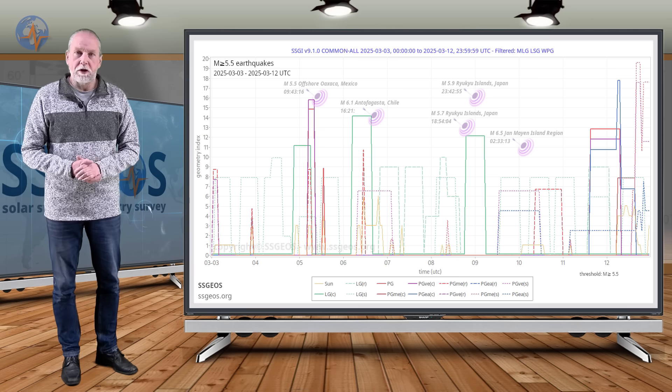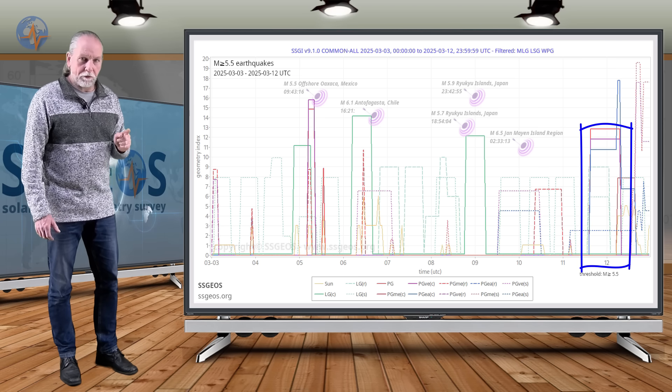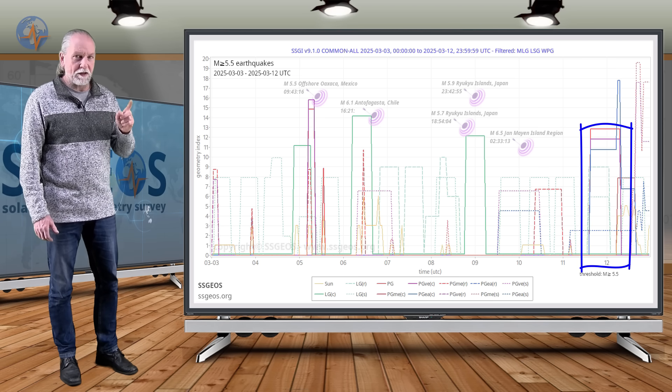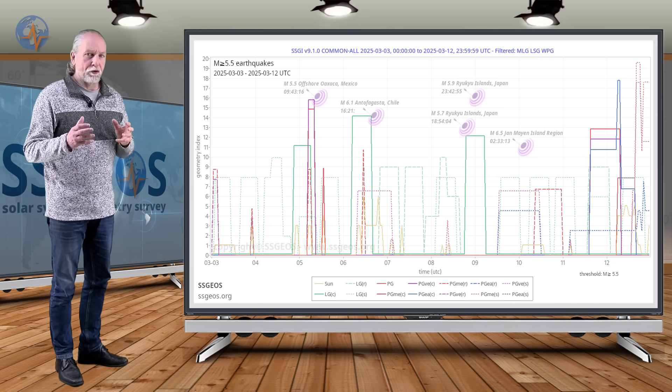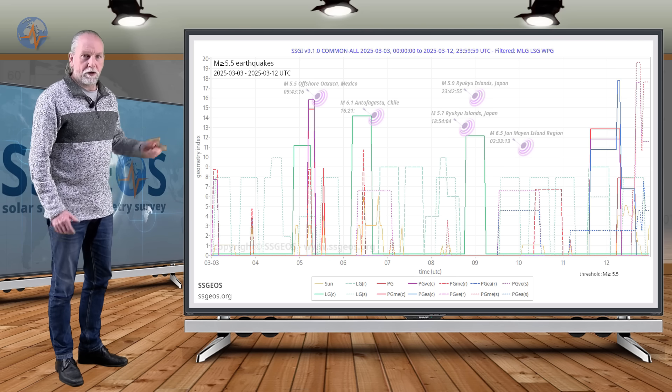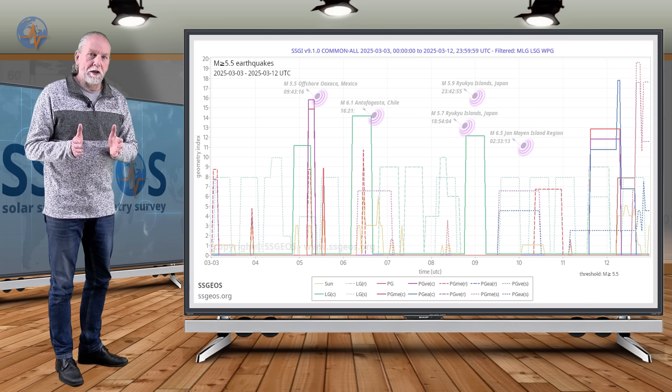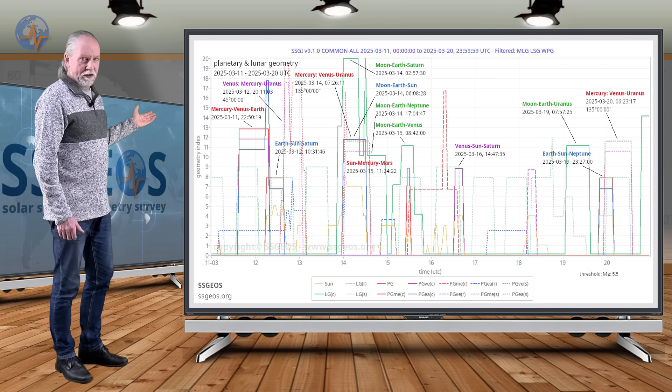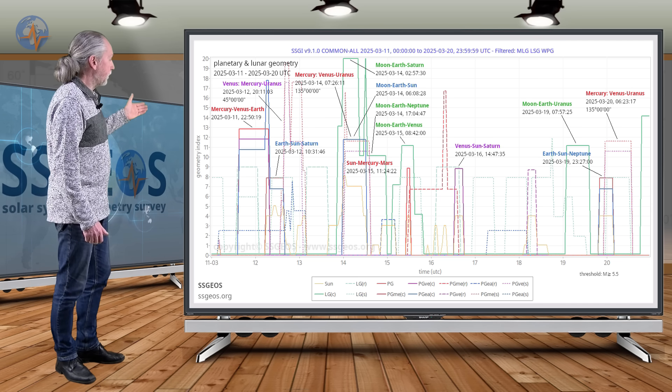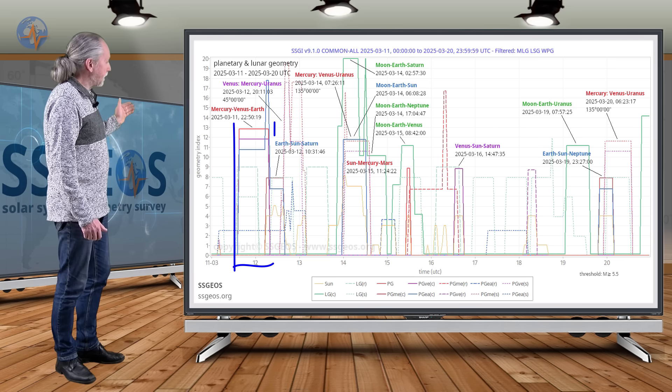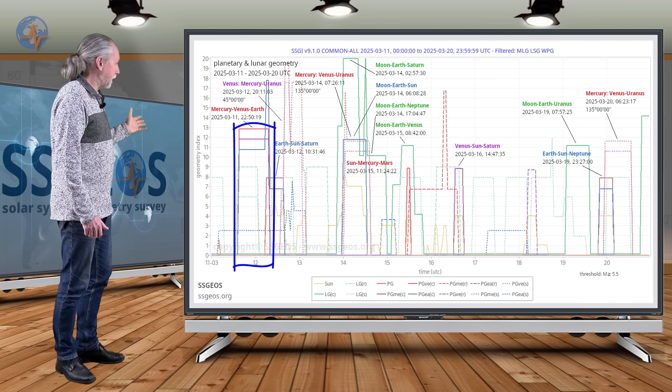I also mentioned the planetary conjunction coming up with Mercury, Venus, and Earth. And I said that that's going to be significant. It may actually already have contributed to the 6.5 this morning because it was pretty strong and the conjunction is already really tight. So if you look at the next timeframe up until the 20th of March, we see right here at the beginning Mercury, Venus, Earth in a conjunction.